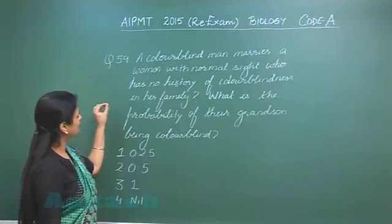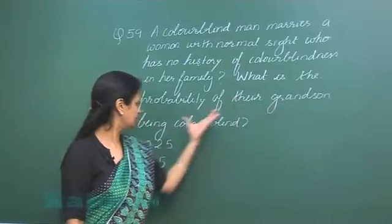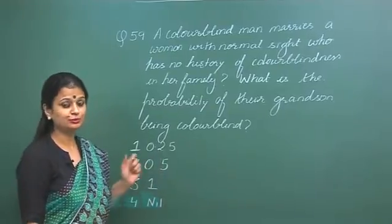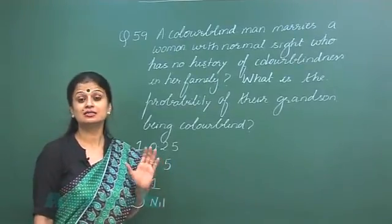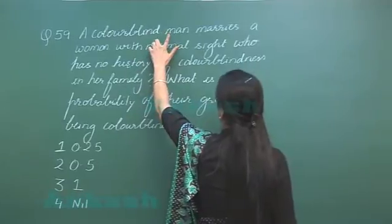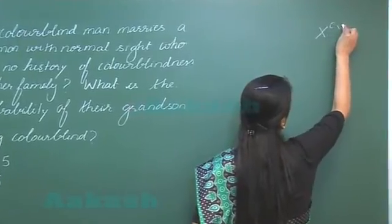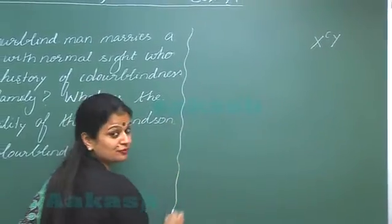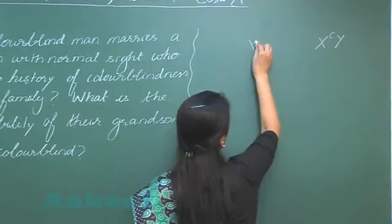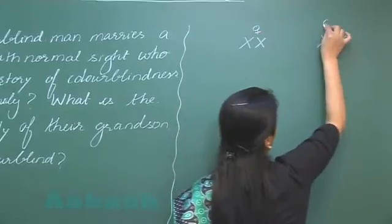In question 59, we have to look at the progeny of the grandson who may be color blind. We have to find the probability. Color blindness is a sex-linked recessive disorder. In this question, the man is color blind, so this would be the chromosome complement of the man. And the female is normal. This is the condition.